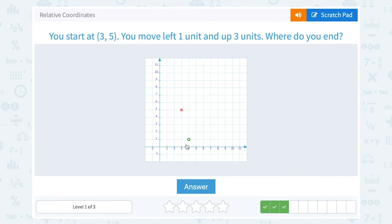You start at 3, 5. You move left 1 unit and up 3 units. So left 1, and then up 1, 2, 3.